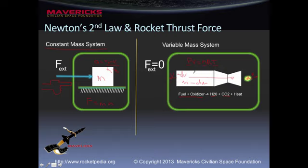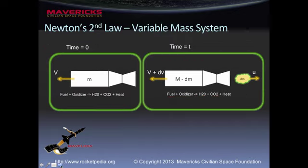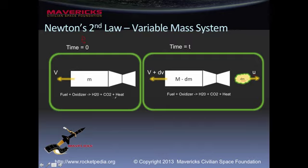Now we need a mathematical relationship for this force to actually figure out the parameters to design our rocket motor. Let's take some time zero. Our momentum p at zero — before our rocket motor kicks out one molecule of gas at velocity u — is just going to be the mass of our rocket motor times its velocity. So p₀ = mv. Pretty straightforward.